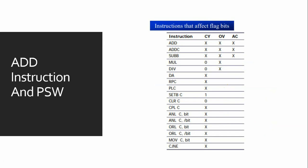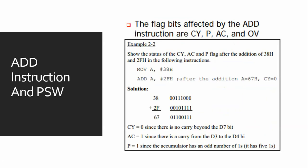Here you can see an example: show the status of CY, AC, and P flags after the addition of 38h and 2Fh in the following instruction. We have MOV A, 38h into accumulator register and ADD A, 2Fh.